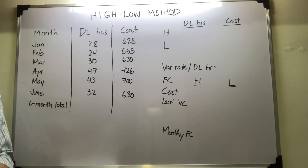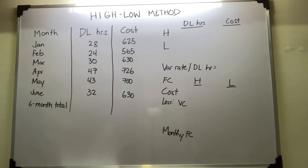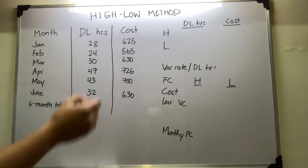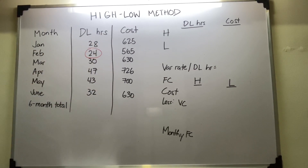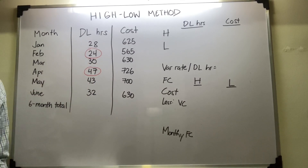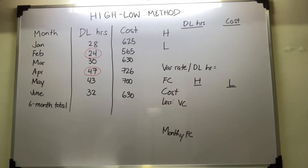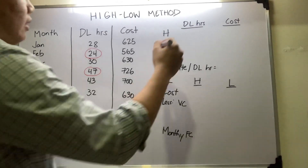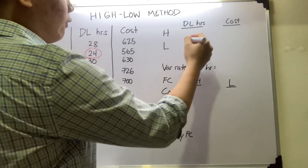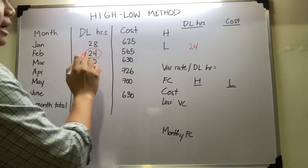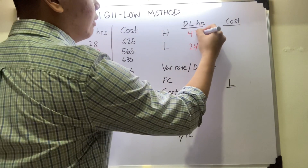Based on the general rule, we get the highest and lowest activity level. We have here a six-month total. The lowest activity level is 24 hours, and the highest would be 47. Now that we've determined the lowest and highest level of activity, we plot them here. For your direct labor hours, you put in the lowest of 24 hours and the highest level of activity, which is 47.